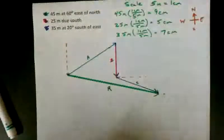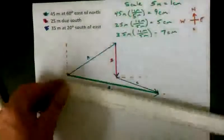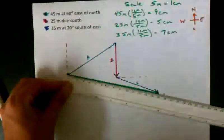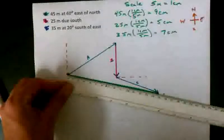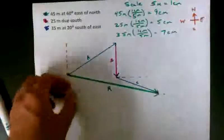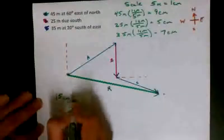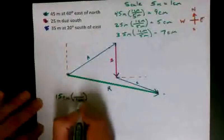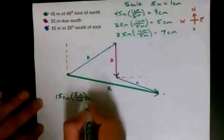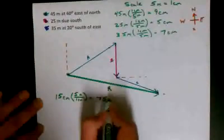Now to get the magnitude of my resultant, I have to measure how long it is. You can see it's about 15 centimeters long. So don't forget, 1 centimeter was 5 meters, so that comes out to be about 75 meters.